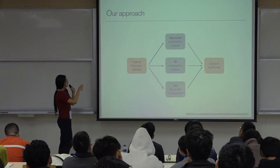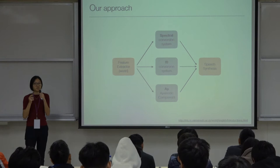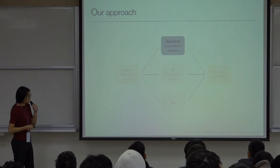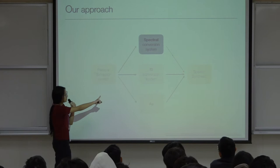Our structure first uses a feature extractor called WORLD, which extracts three parts: the spectral part, the fundamental frequency, and the aperiodic component. Our model mainly transforms the spectral part. The fundamental frequency component goes through a linear transform, and the aperiodic component remains the same. We then synthesize the three parts together to produce the output.